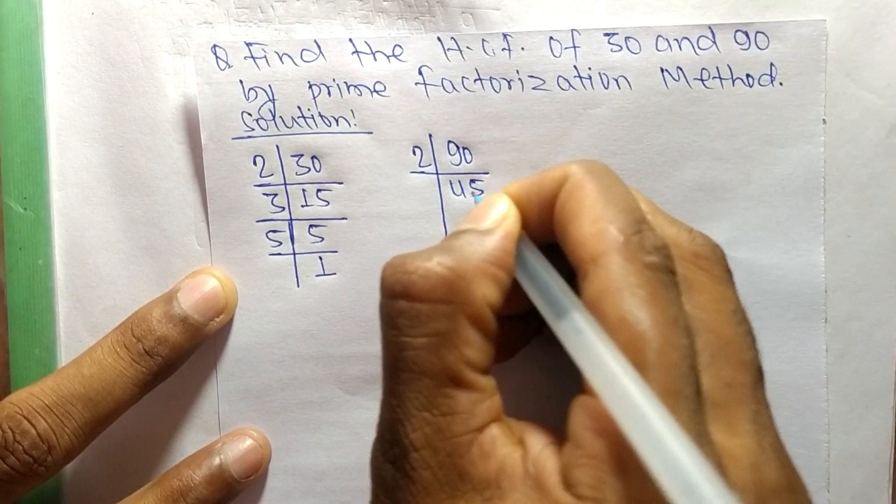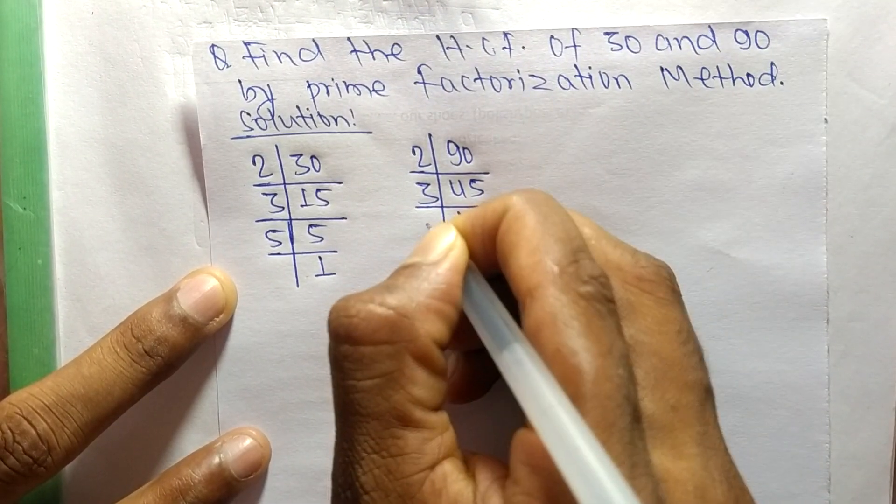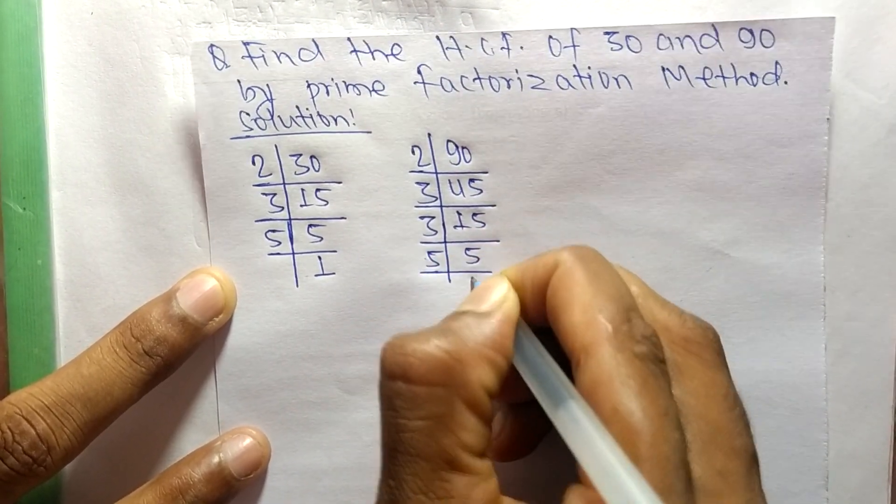The prime factors of 90 are: 2 times 45 equals 90, 3 times 15 equals 45, 3 times 5 equals 15, and 5 times 1 equals 5.